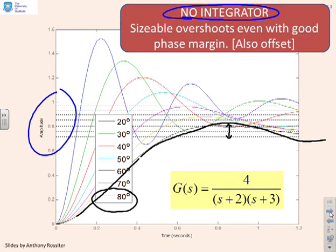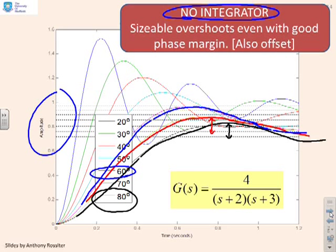There's the overshoot for the 80-degree phase margin. At 70 degrees, you still have a sizeable overshoot—certainly more than 10%, maybe not quite as big as 20%, but getting close. If I go down to 60 degrees, this magenta one, now you see the overshoot really is quite large.